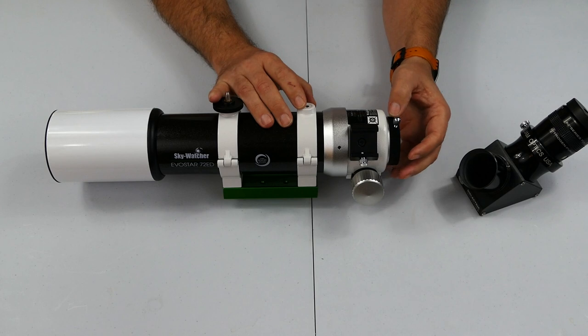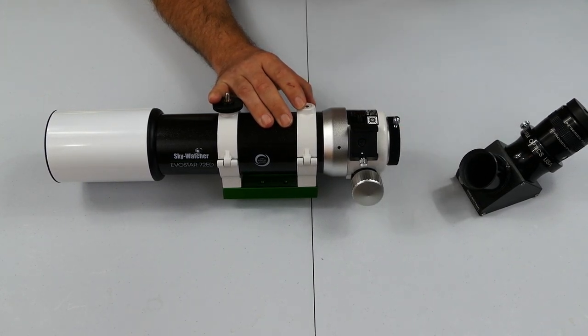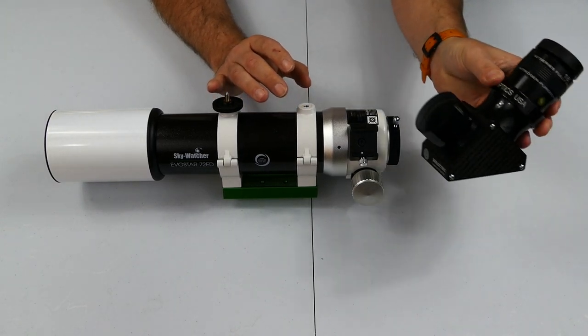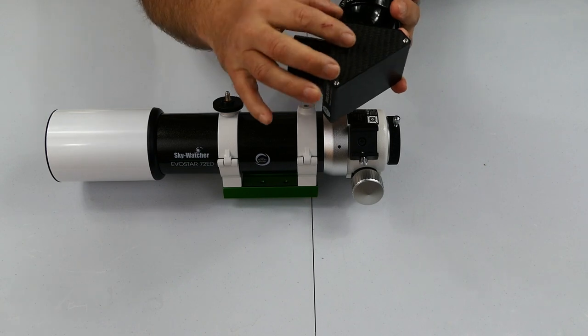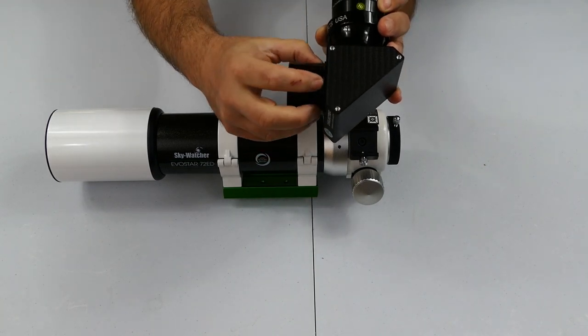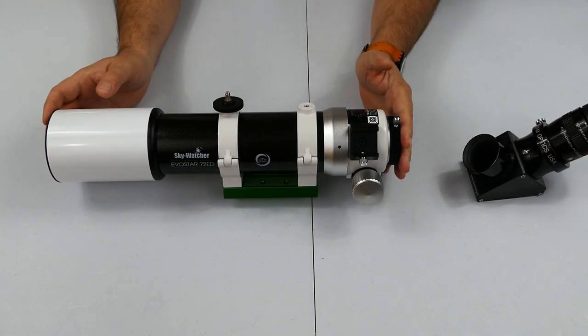So I wouldn't be comfortable at all with my camera gear hanging off the end of that. First Light Optics actually do do a different type of fitting for this, and that has a compression ring in there, so I will probably get one of those to then try it out with a DSLR.